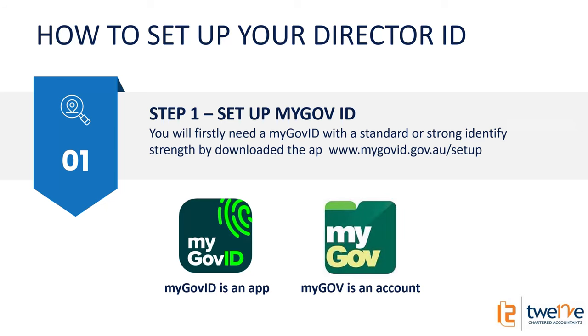Not to be confused in any way with MyGov. MyGov ID is not related to the MyGov account in any way. If you get nothing else from this webinar, that's what you've got to get out of it. A lot of people I've spoken to say, 'Oh, I've already got a MyGov account,' and I say, 'No, that's not the same.' What MyGov is, is an account - it's a web page where you put all your details and it's linked to Centrelink and a few other things. Nothing to do with the MyGov ID. MyGov ID is just an identity verification process. That's all it is.